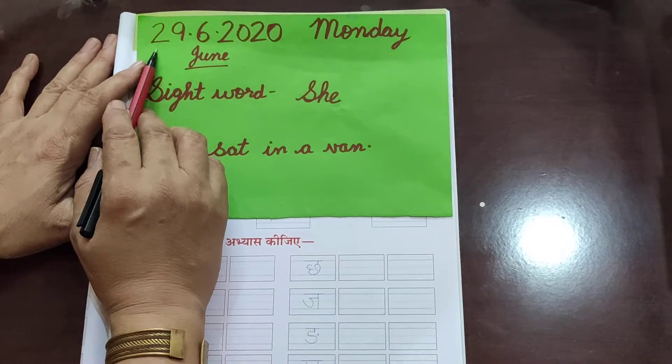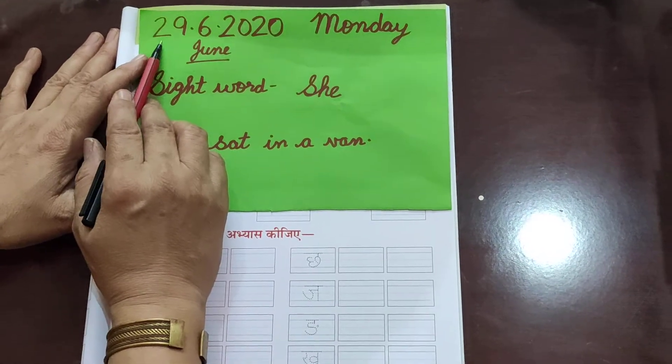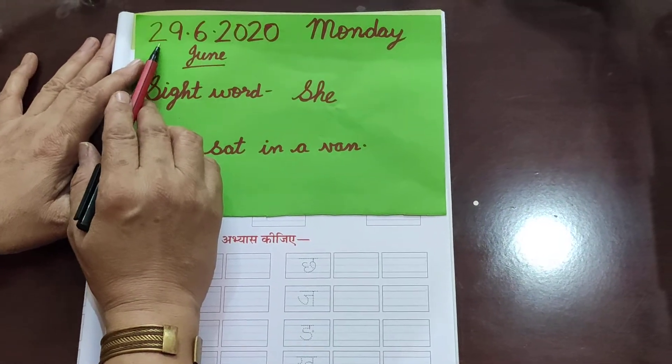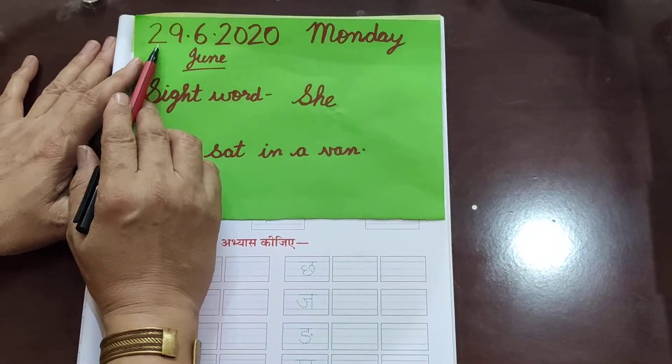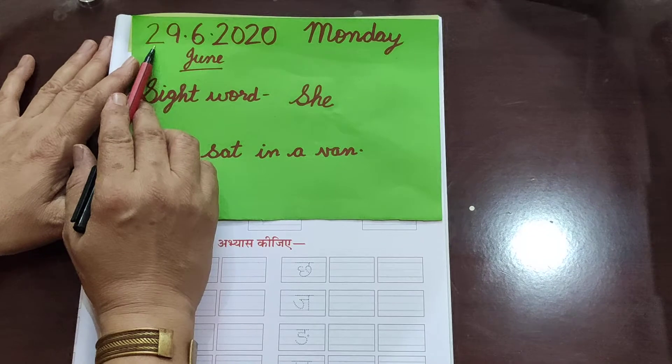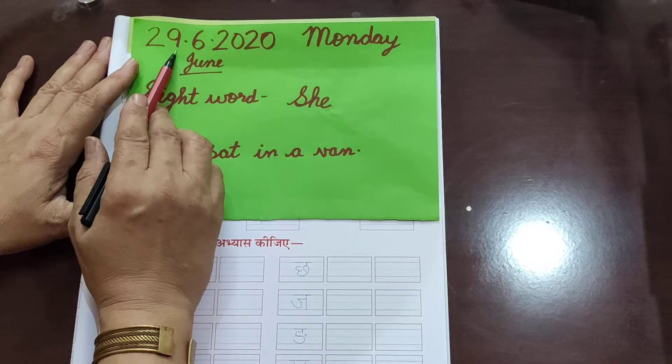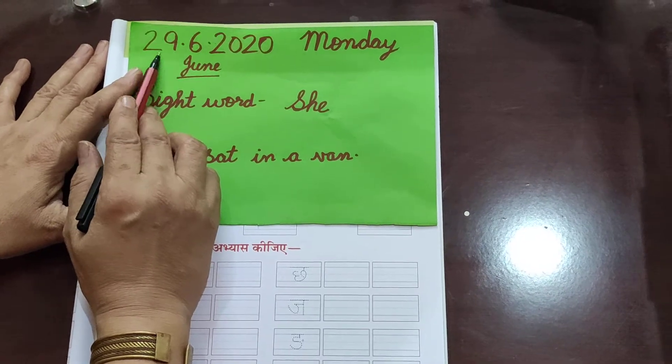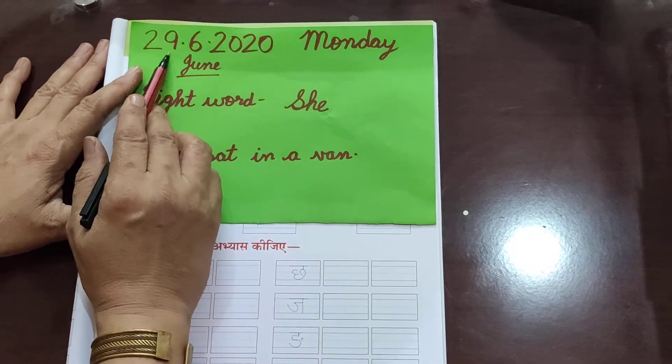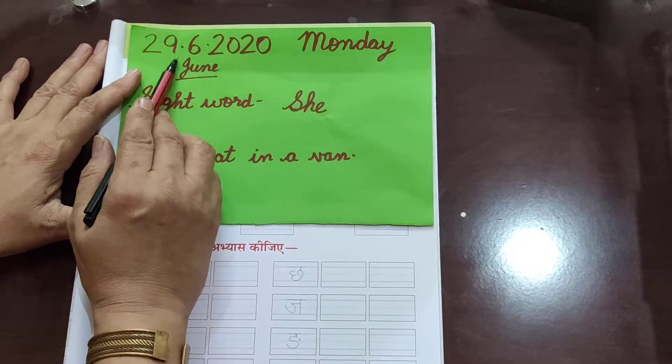Good morning children. How are you all? We start our day. Today date is 29th. What is the date today? 29th.